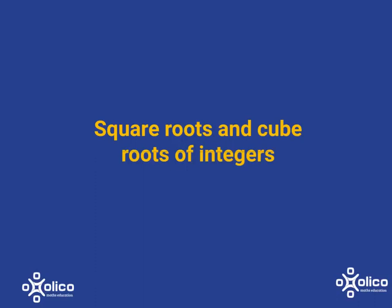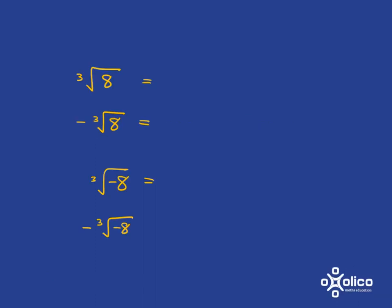Let's discuss the square roots and cube roots of integers. Starting with the cube root of 8 — remember, when I'm asking for the cube root of a number, I'm asking what, when multiplied by itself three times, will give me 8 as the answer. Here, obviously, it is 2, because 2 times 2 times 2 gives me 8.